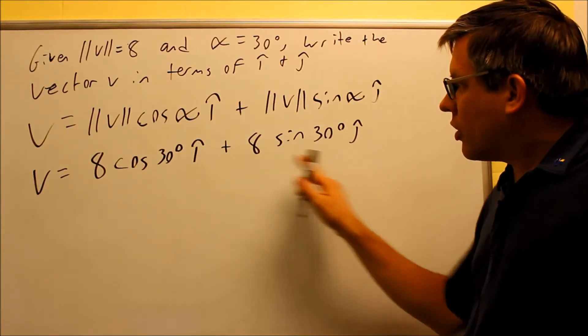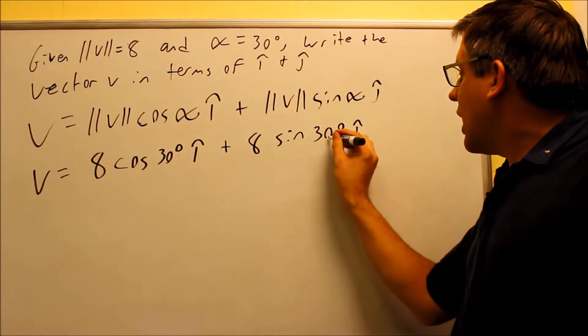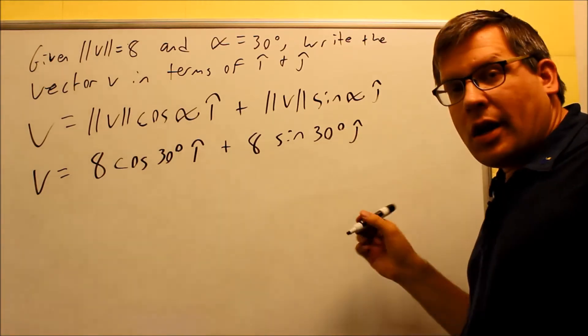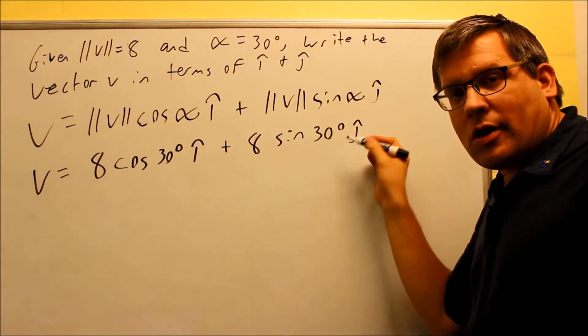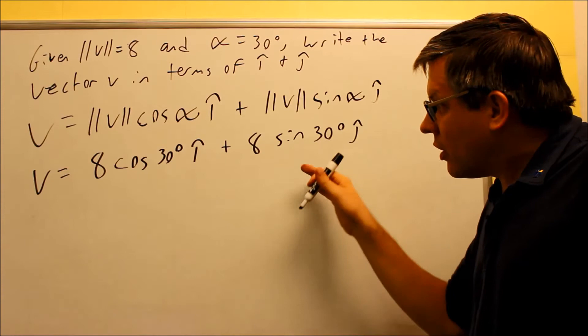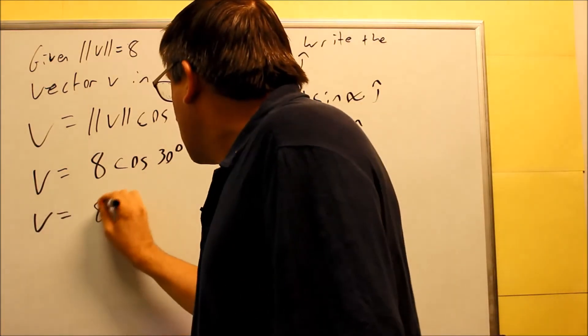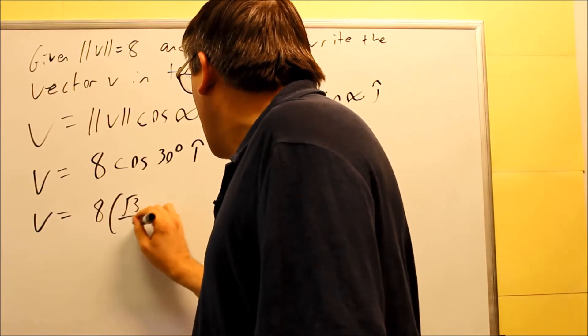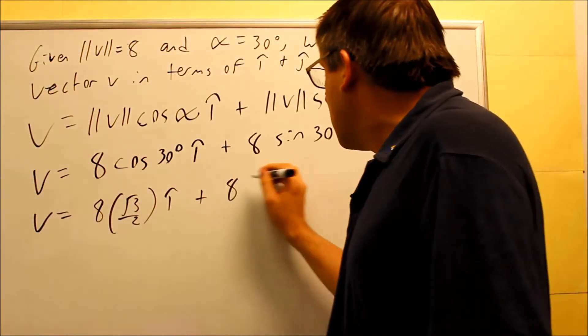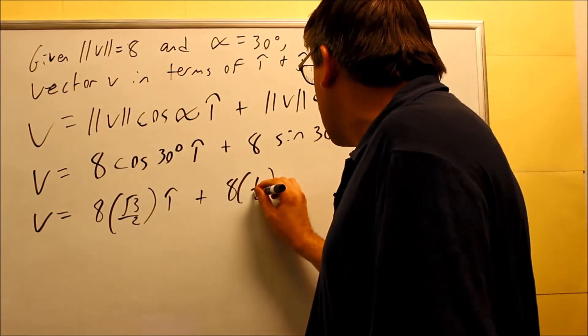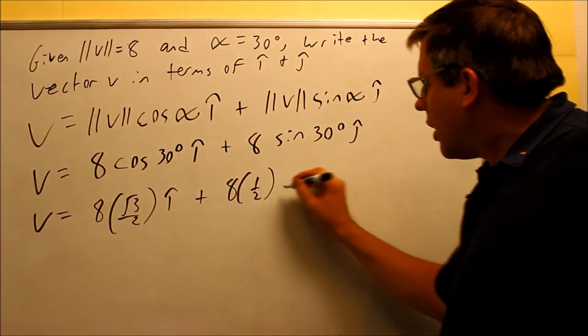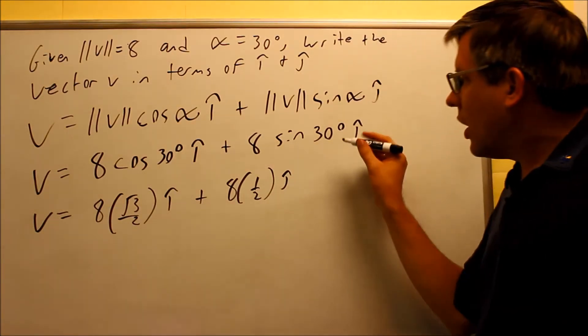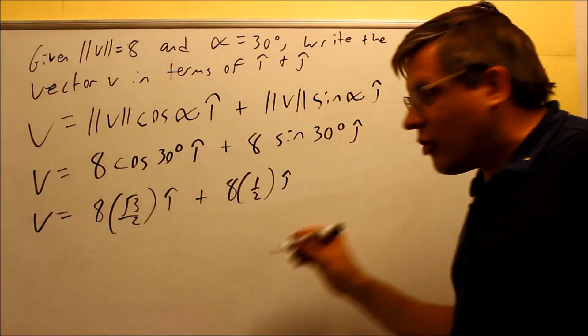Okay, so now that we have this, we're just going to simplify because we have our table. 30 degrees is on our unit circle or our table. We can get the exact value for each of these. Cosine 30 is, the value is square root of 3 over 2, that's the exact value. This one is going to be, sine 30 is 1 half from our table.